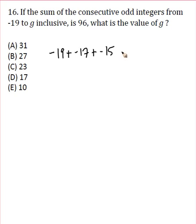Negative 19, negative 17, negative 15, negative 13, and when you go on and on and on to some number you get 96. So the only problem is on test day you don't want to sit there with your calculator going negative 19 plus negative 17 plus negative 15. There's always going to be a quicker way if you find yourself doing something like that. So let me show you the trick.